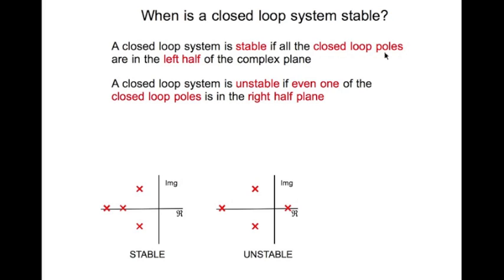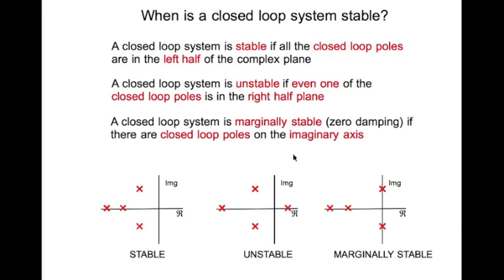A closed-loop system is unstable if there is even one pole in the right half plane. You could have a hundred poles in the left half plane and just one pole in the right half plane, and the system is unstable. A system is said to be marginally stable when you have zero damping — that is, closed-loop poles on the imaginary axis with all other poles strictly in the left half plane. With such a system, if you give an impulse input it starts oscillating and remains like that forever.